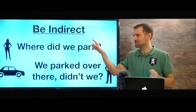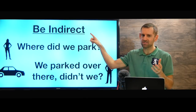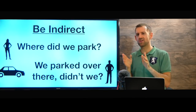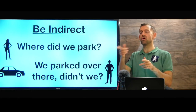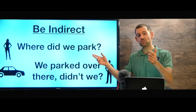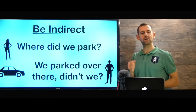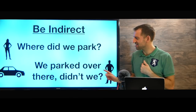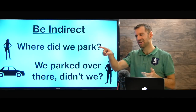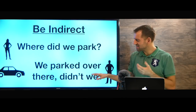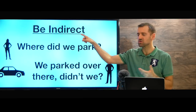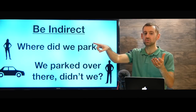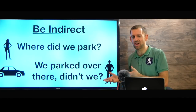Another reason we might use tag questions is to be indirect. Very often, being indirect is polite — it means we're not being arrogant, or harsh, or acting like we know everything. Let's say we go shopping, and after we're finished, you say 'Where did we park?' And I say, 'We parked over there, didn't we?' I know where we parked, but I say it this way to make it more indirect and polite. If I just say 'We parked over there,' you might feel stupid. So it can be polite.